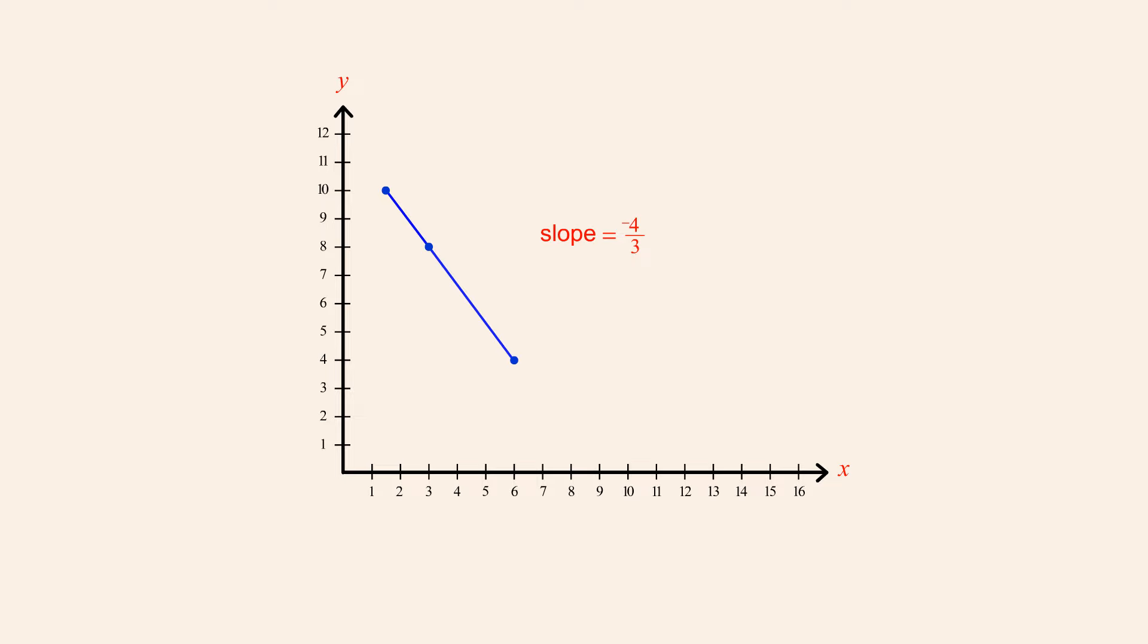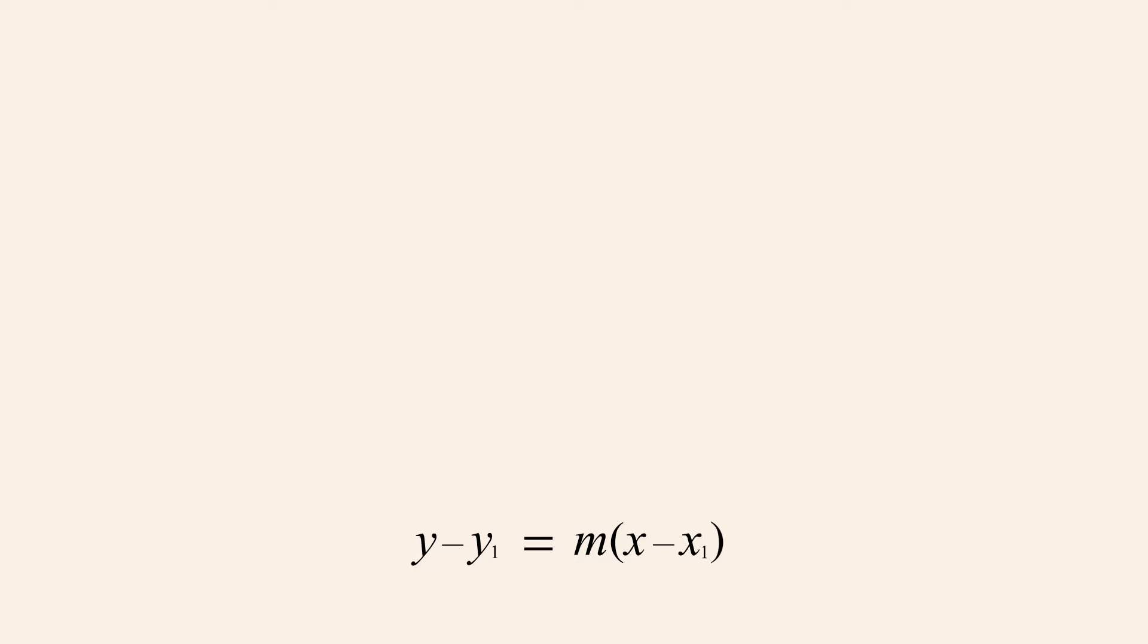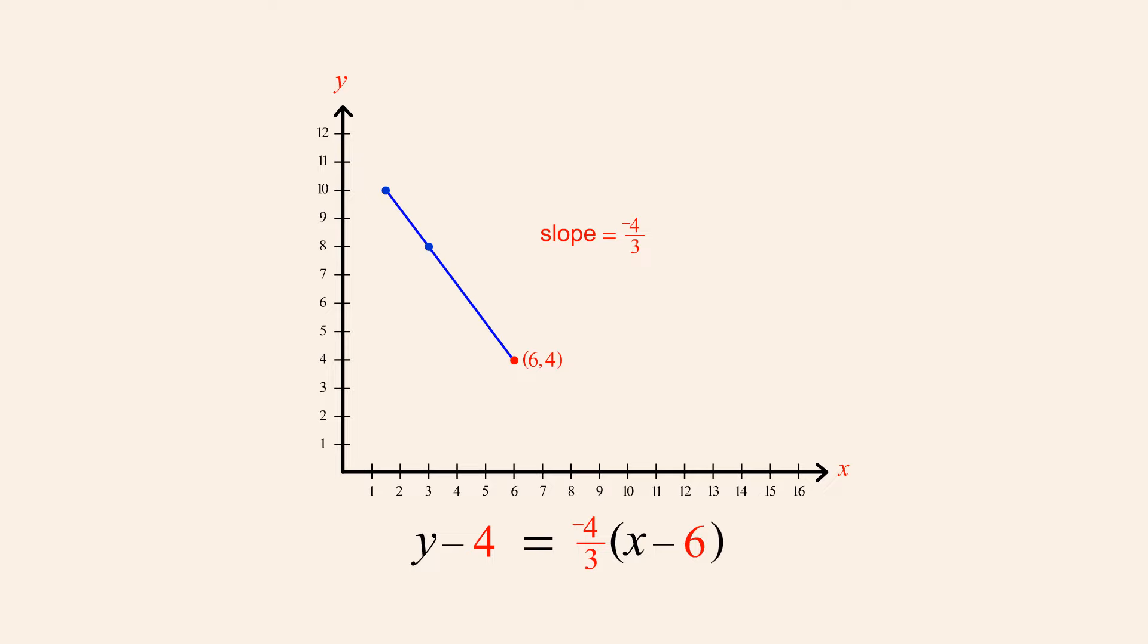Since we know this line's slope, and at least one point which falls on the line, we can write the equation for this line using the point-slope form. If we choose the bottom point, which has coordinates 6, 4, to use as the known point in the point-slope formula, then x1 is 6, y1 is 4, and the slope m is negative 4 thirds.